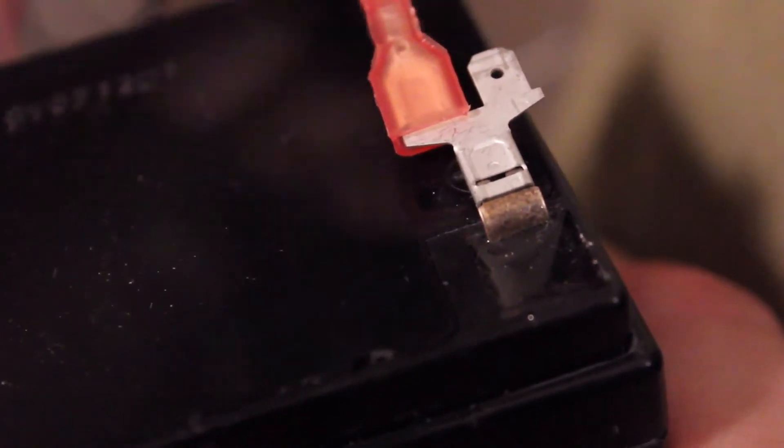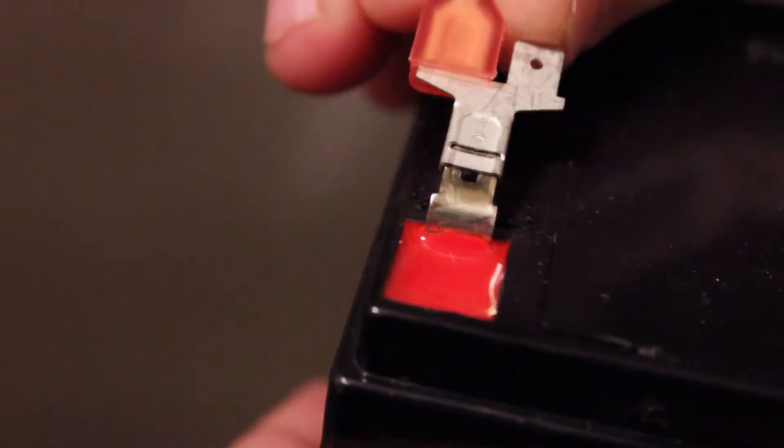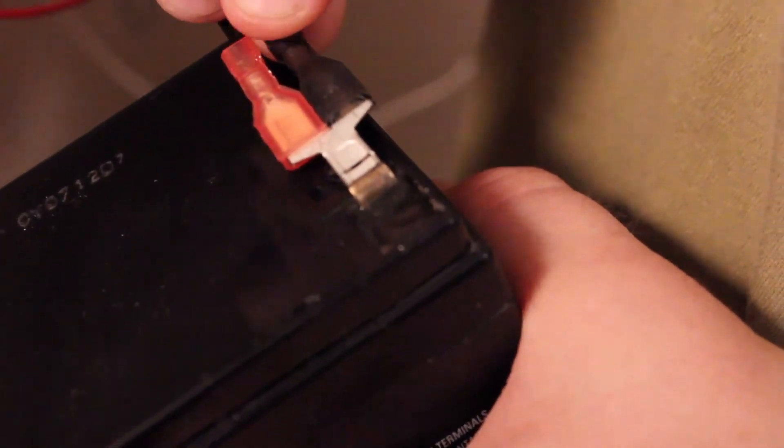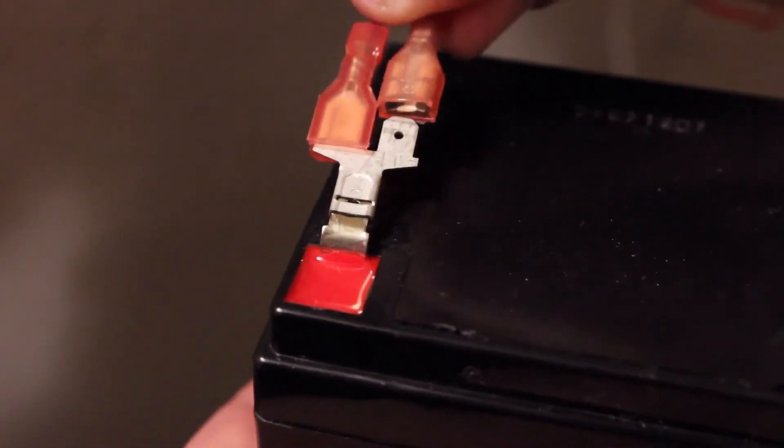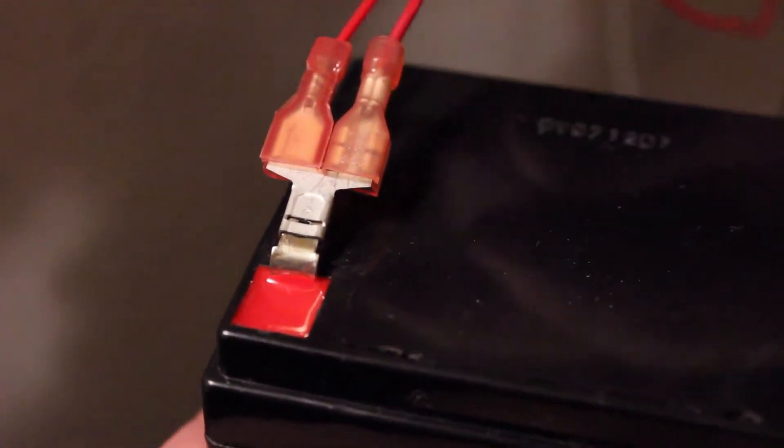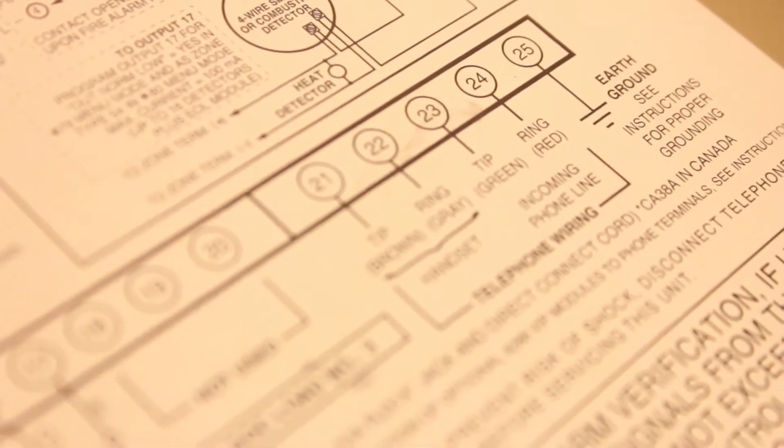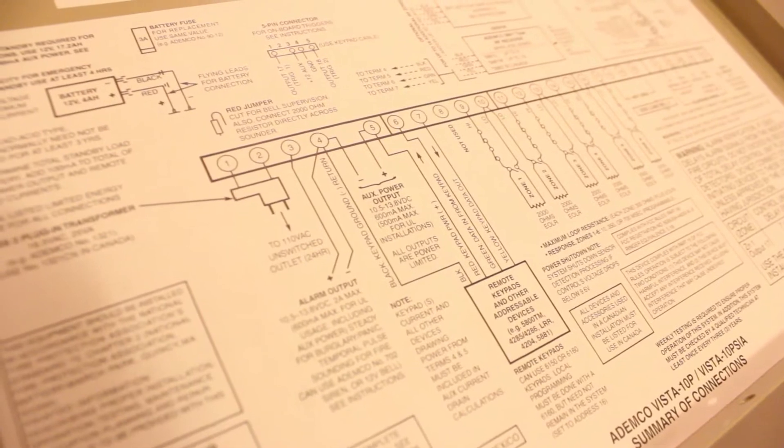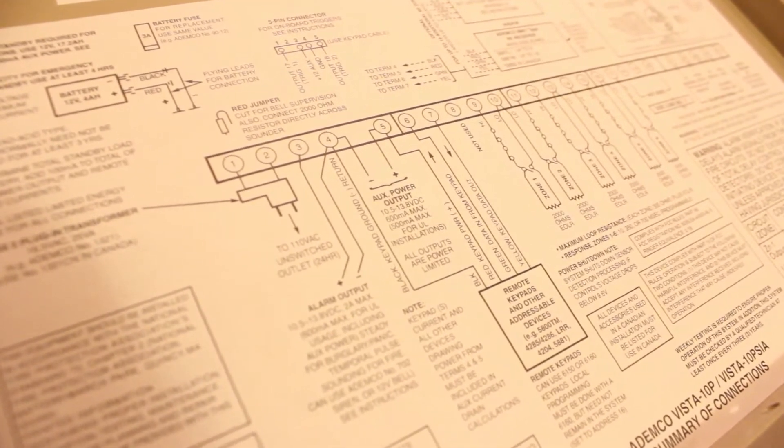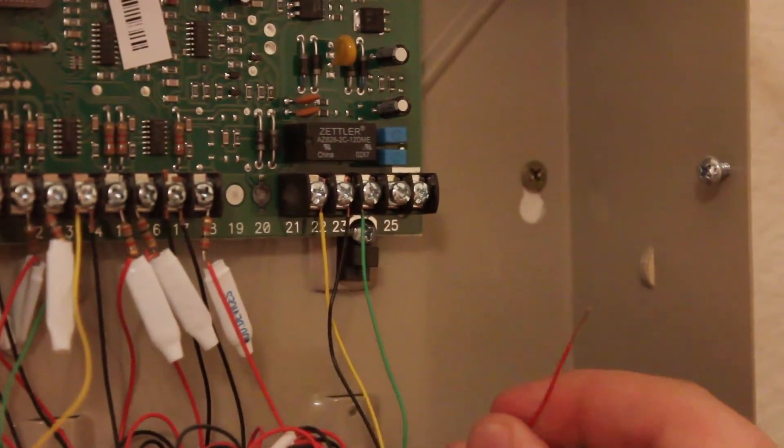Black to black, red to red. Reconnect the alarm panel leads to the battery, again black to black, red to red. Consult panel schematics to confirm the location of the dialer, usually located on the interior door of the box. Remove the telephone wires from the dialer.